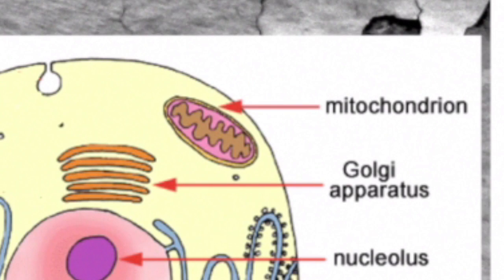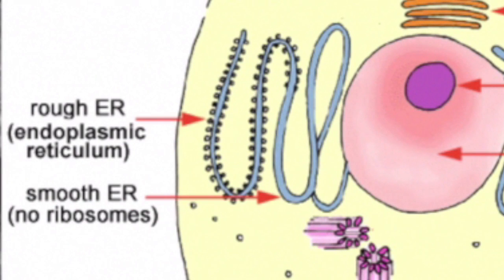Next is endoplasmic reticulum. It is also known as the ER. The structure of it is like a maze of passageways. Ribosomes are parts of the ER. The others float in the cytoplasm. The function is to produce many different substances, one of which are the ribosomes.